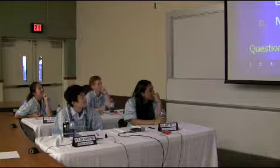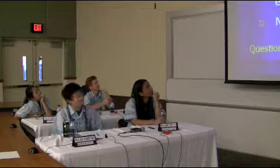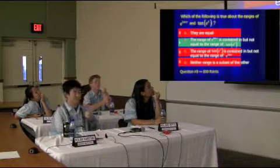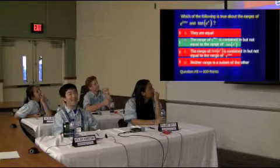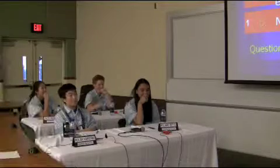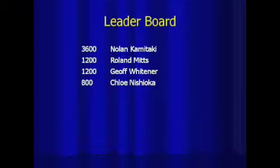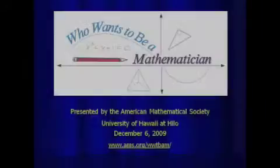So Jeff, you're staying with what you have there? All right, so we'll let the clock run down. You chose A — all right, see if A is the right answer. This is what we call the 'Who Wants to Be a Mathematician' format. We'll change the second place score — we have Nolan with 3600 and Chloe with 800.